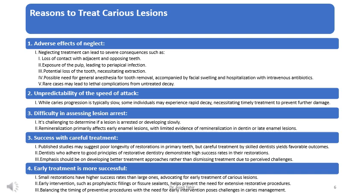Unpredictability of the speed of attack: while caries progression is typically slow, some individuals may experience rapid decay, necessitating timely treatment to prevent further damage. Difficulty in assessing lesion arrest: it's challenging to determine if a lesion is arrested or developing slowly. Remineralization primarily affects early enamel lesions, with limited evidence of remineralization in dentin lesions. Success with careful treatment: published studies may suggest poor longevity of restorations in primary teeth, but careful treatment by skilled dentists yields favorable outcomes. The focus should be on developing better treatment approaches rather than dismissing treatment due to perceived challenges.